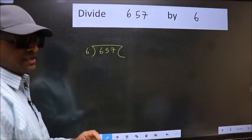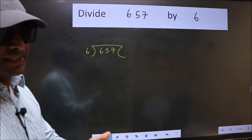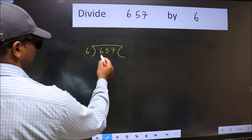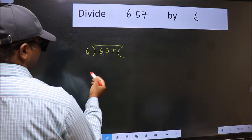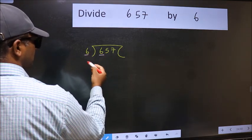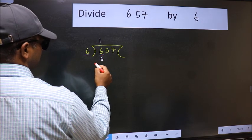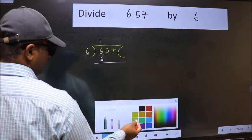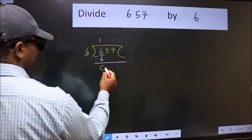This is your step 1. Next, here we have 6 and 6 here. When do we get 6 in the 6 table? 6 once 6. Now we should subtract. We get 0.